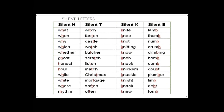Words with silent B — it is 'lamb,' not 'lamb' with the B pronounced. The B is silent. Repeat after me: lamb, thumb, numb, crumb, climbing, bomb, comb, doubt, plumber, limb, debt, and tomb.